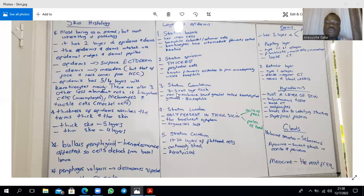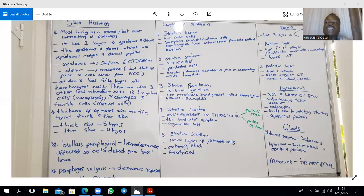The Ruffini corpuscles are also mechanoreceptors. There are epidermal appendages which originate embryologically from the epidermal epithelium and then invaginate into the dermis. These include the hair follicles, the sebaceous glands, and the sweat glands, which can be eccrine or apocrine. The sebaceous glands have a holocrine secretion, and they burst and secrete via short ducts into the hair follicle.